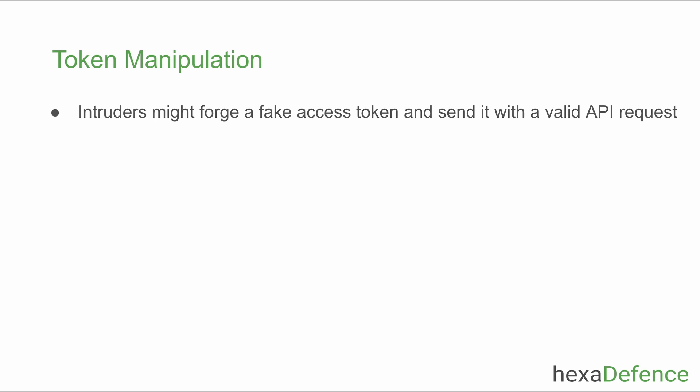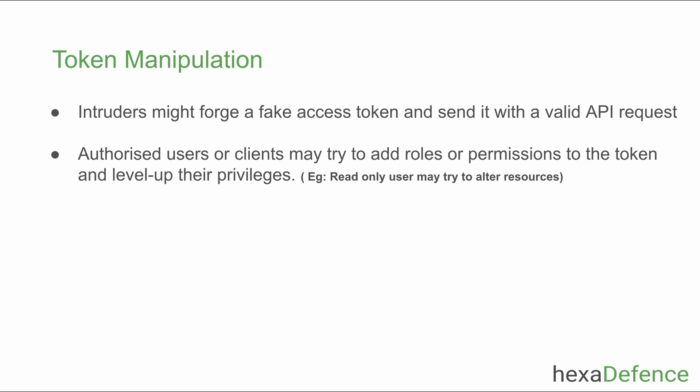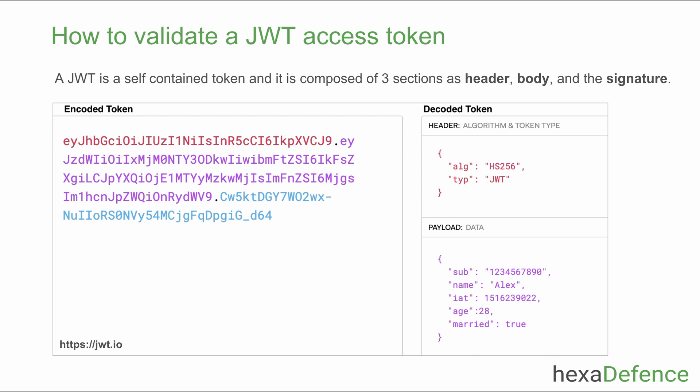An intruder might forge a fake token and send it with a valid request, or a valid user might alter the token by adding additional roles or permissions and try to perform an operation where they are not authorized to do. Therefore, prevention of this kind of misuse is mandatory — that's why token validation is a very important aspect.